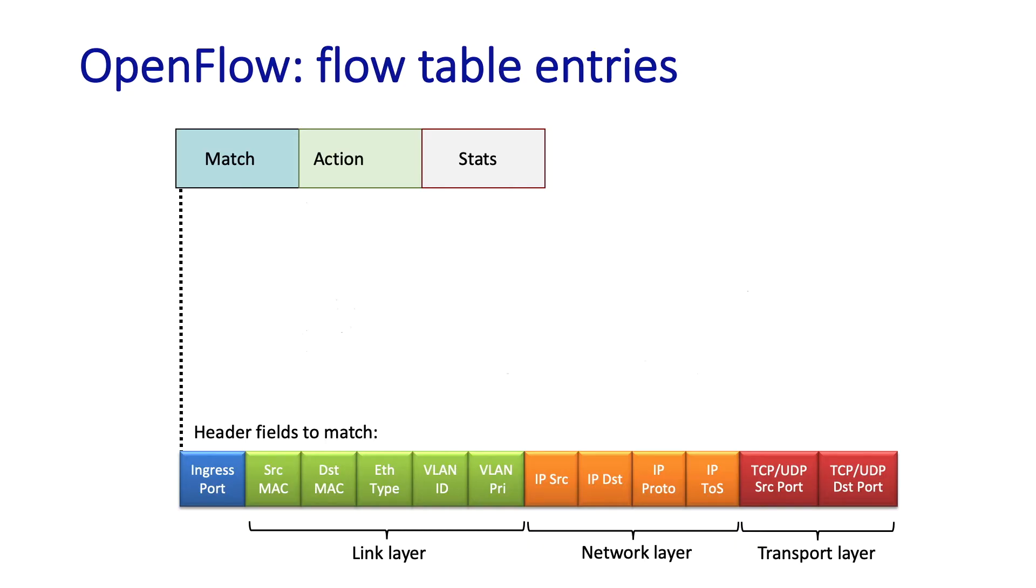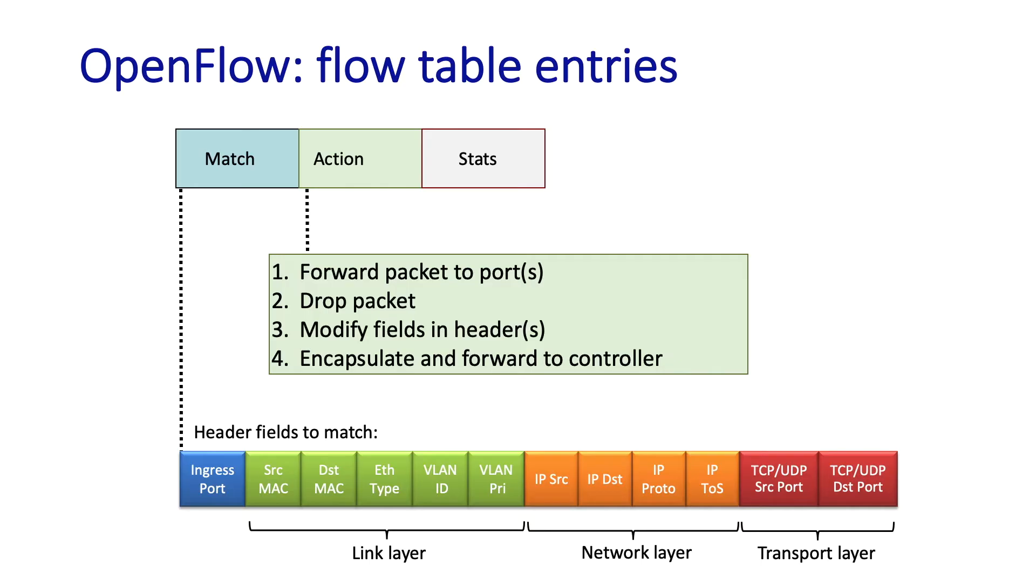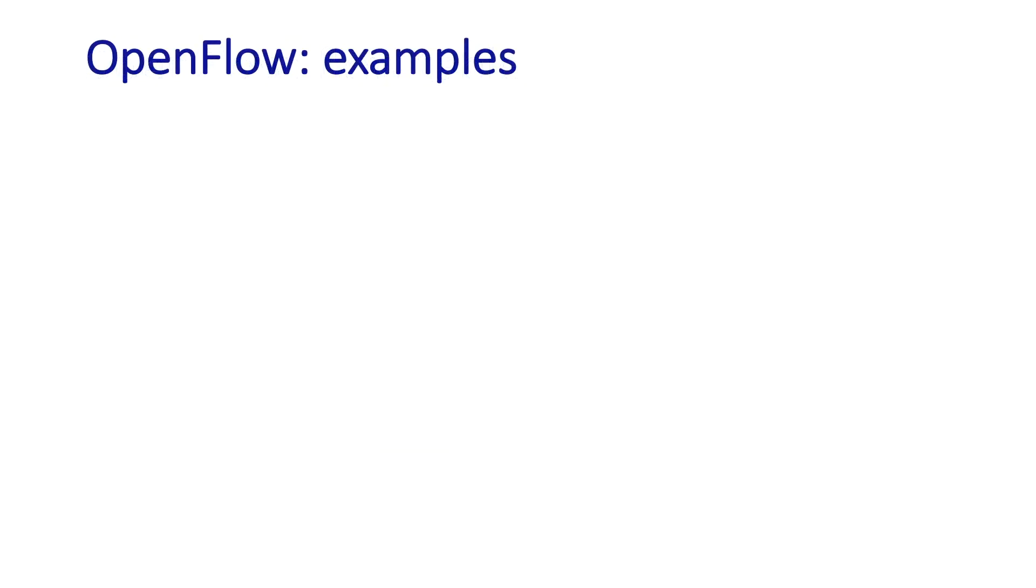Here's some of the actions that can be taken on a match. The packet can be forwarded to a particular output port or duplicated and sent to a set of ports. The packet could be dropped. The fields in any of the headers we see below could be modified and rewritten. Or the packet could be encapsulated and forwarded to the SDN controller, which would then presumably take some kind of control action.